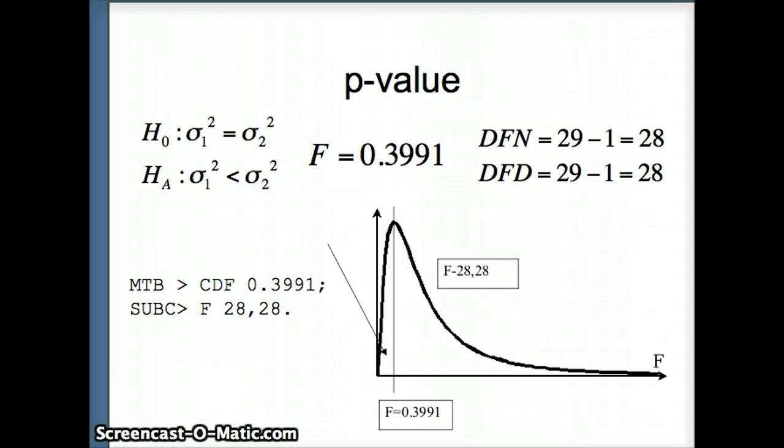So we ask Minitab, CDF 0.3991 semicolon F 28, 28. And what does it give me? It gives me 0.008926. So indeed, this is exaggerated. 0.3991 should be quite a bit further to the left. But that area in that tail is only 0.0089. So 0.0089 there.